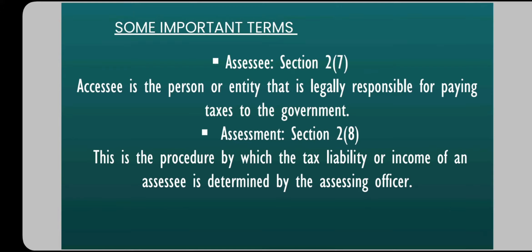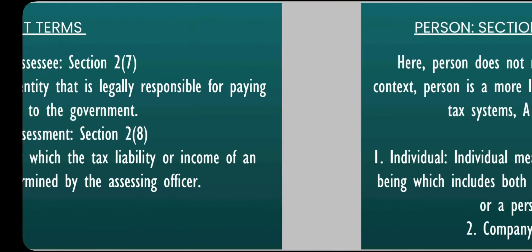So, assessee is the taxpayer who is legally responsible for paying the taxes, and the Assessing Officer calculates that assessee's income — that procedure is called assessment under Section 2(8). It may be by way of a normal assessment, or by way of reassessment of an income that was previously assessed. Both are included in this. I hope these two terms — Section 2(7) for assessee and Section 2(8) for assessment — are clear.